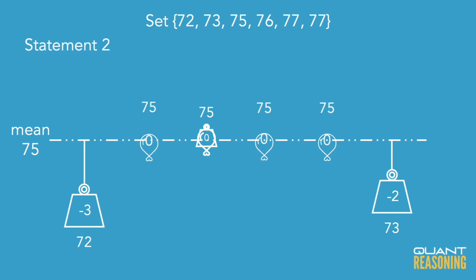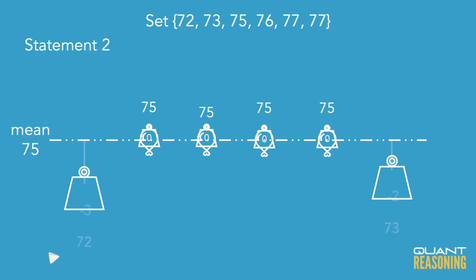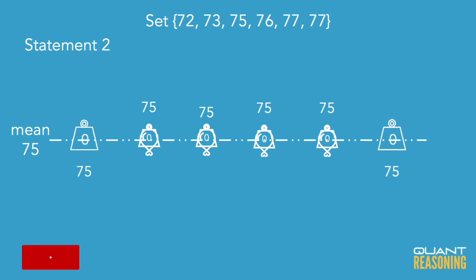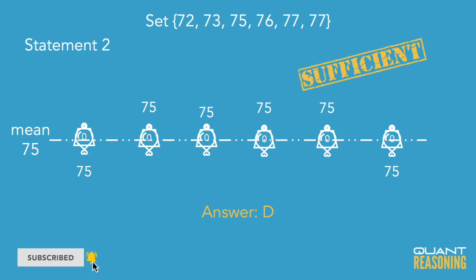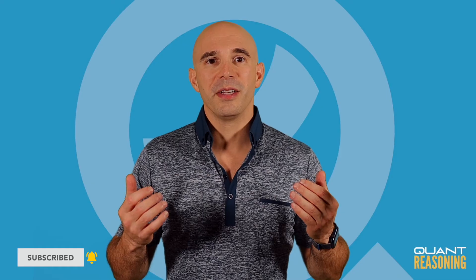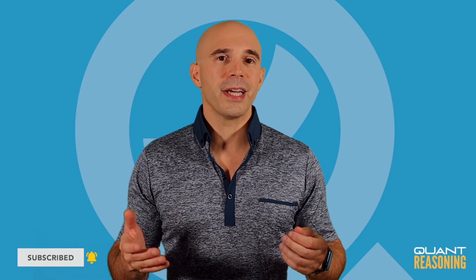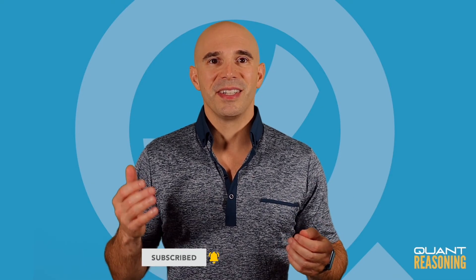If none of the numbers are above the average, none will be below the average either. In other words, each statement on its own implies that all six numbers are equal to 75, and therefore the correct answer is D.